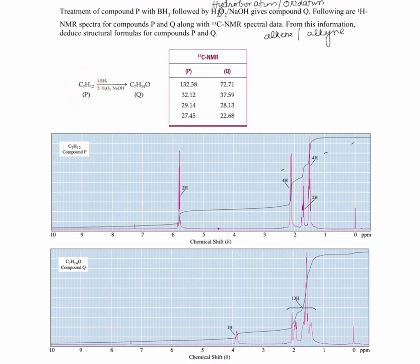For that, let's take a look into the degree of unsaturation. So this is going to be 2C plus 2 plus nitrogen minus hydrogen minus X divided by 2. That's going to be 14 plus 2 plus nitrogen minus 12 minus 0 divided by 2. So when you do everything, it's going to be 2.